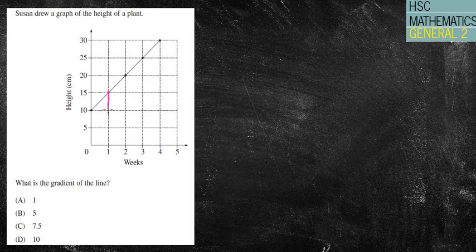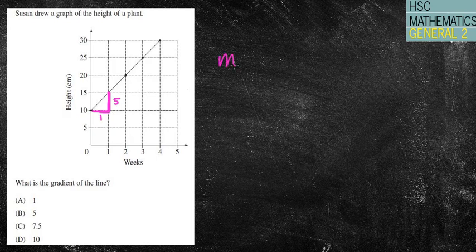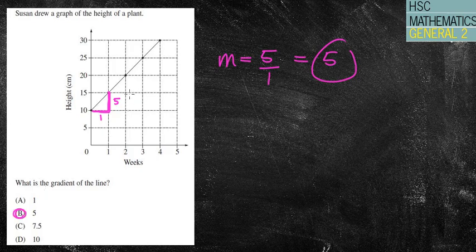Well I'm just going to use that as my triangle there. Now it goes at one box but each box for that one for my rise is 5 and my run is 1. So my gradient equals 5 over 1 which equals 5. Therefore B is my answer. Likewise you could have chosen a bigger triangle. In that case it would be 10 over 2 which is still going to be 5.